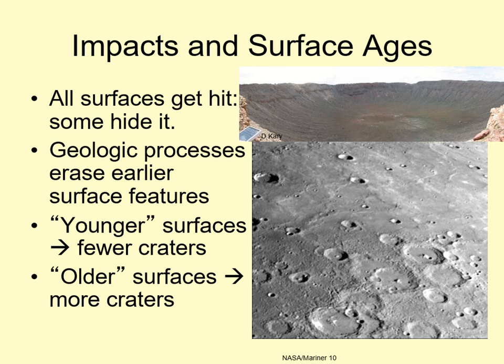Note that when we talk about the age of a planetary surface, we're really talking about how recently the surface has been refreshed, not the age of the world as a whole. There's no reason to expect any of the worlds in our solar system to be younger than 4 billion years old — it's just that many are good at hiding their age.